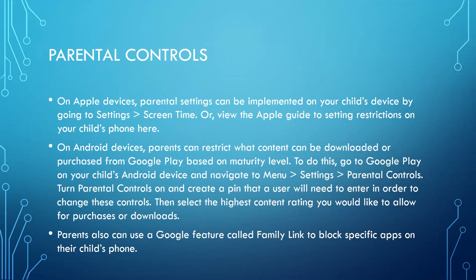Just some other parental controls. On an Apple device, parental settings can be implemented on your child's device by going to Settings and then Screen Time. On Android devices, parents can restrict what content can be downloaded or purchased from the Google Play Store based on maturity level — so if you have a young child, you can restrict anything rated PG or PG-13. For Android, go to the menu, find the gear icon for settings, go to Parental Controls, and turn them on. You can create a PIN — typically four digits — that the user will need to enter in order to change these controls, so make sure you're the one who sets that PIN.